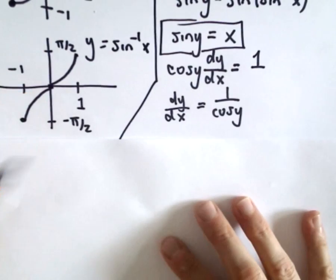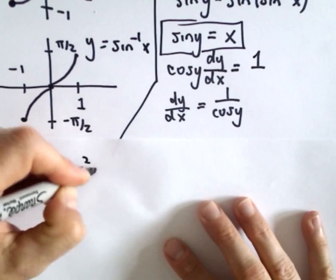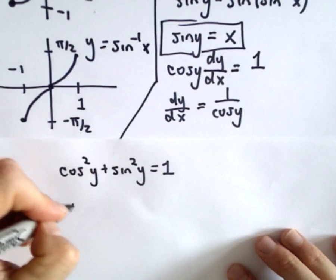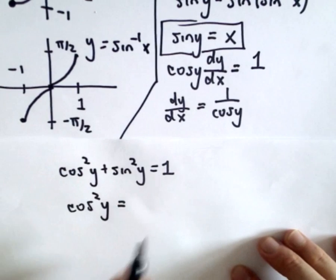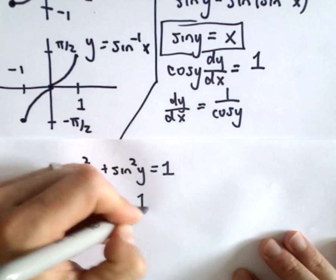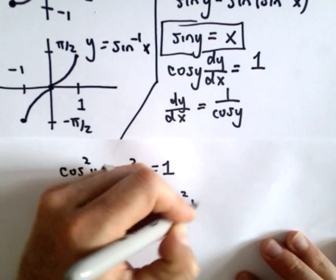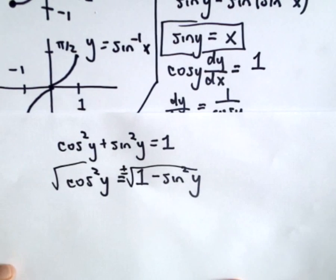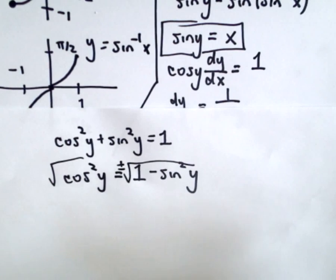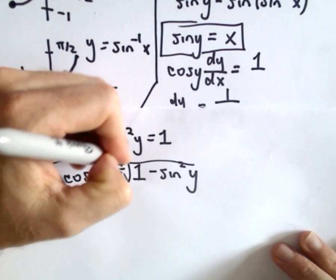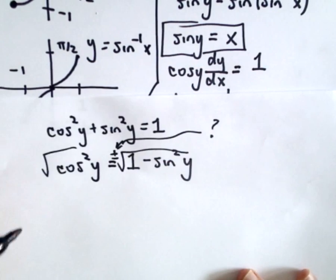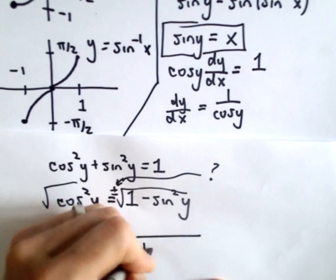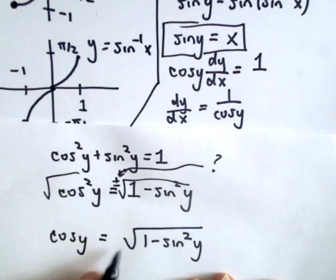I'm going to use a trig identity: cosine squared of y plus sine squared of y equals 1. I'll solve for cosine of y by subtracting sine squared from both sides, giving cosine squared of y equals 1 minus sine squared y. Now I take the square root of both sides. In general when solving an equation we include a positive or negative, but let's think about which one we actually need. So: do I want a positive or a negative?